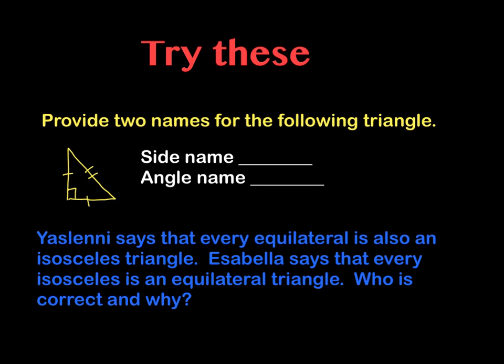And then my second situation is as follows. Yaslenni says that every equilateral triangle is also an isosceles triangle. And then Isabella says that every isosceles is an equilateral triangle. Who is correct and why? This is probably the trickiest question whenever you're talking about triangles, so really be careful with this. Think it through. One is right and one is not. So figure out who is right and give me a little explanation as to why they are right.